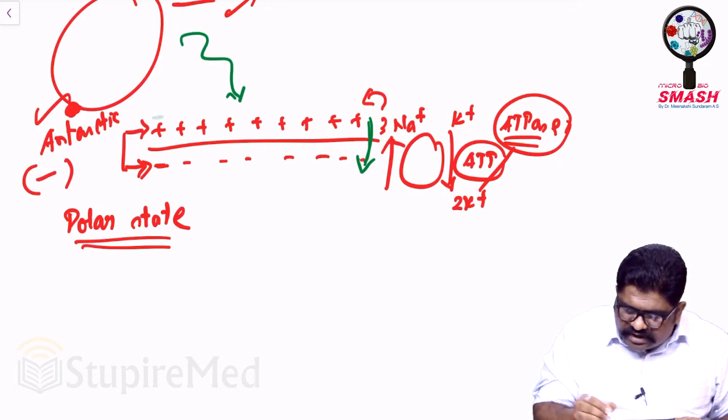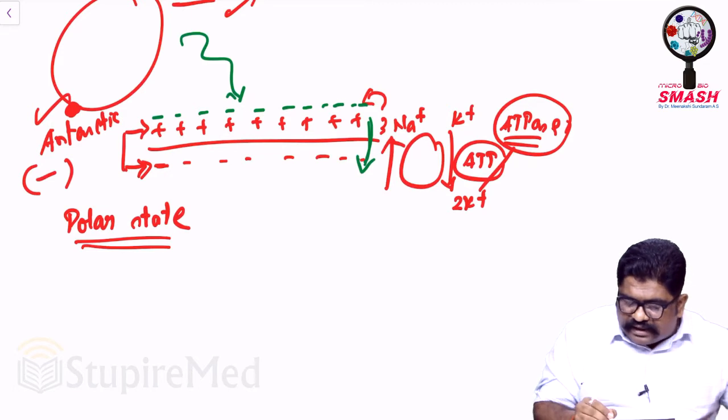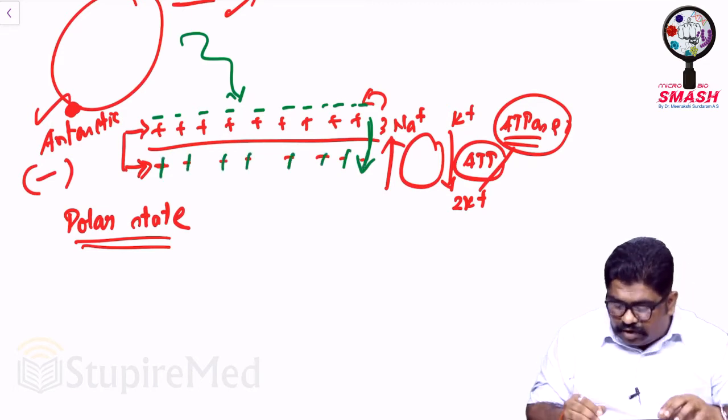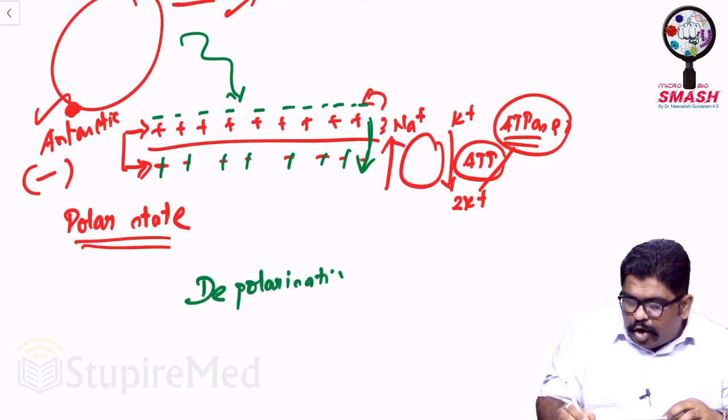So that means the first plus turns into minus, so slowly every single plus will start flipping into minus, minus, and minus, at the cost of the inner minus becoming plus, plus, plus, and plus. Now this is called depolarization.